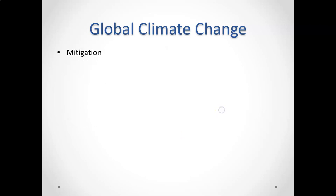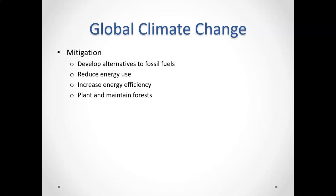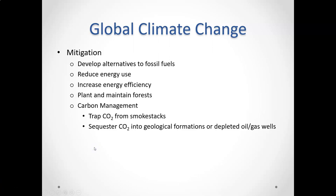Mitigation means specifically focusing on reducing our carbon dioxide emissions. In practical terms, we need to reduce our energy use overall globally — especially those countries that produce the most carbon dioxide. We need to develop alternatives to fossil fuels. We need to plant and maintain forests, since trees and plants are carbon absorbers that suck in carbon dioxide to make food. However, at the same time we're putting out more carbon dioxide, we're also cutting down trees — kind of a double whammy for the environment.